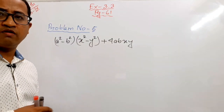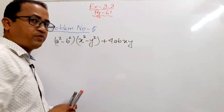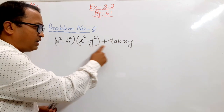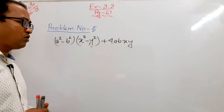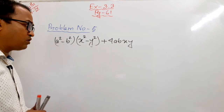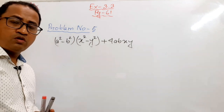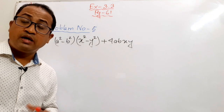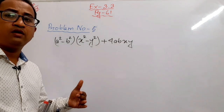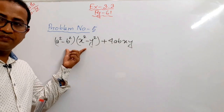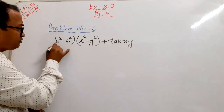Question number five: (a² − b²)(x² − y²) + 4abxy. There are two terms, no common factor, it is not a perfect square, and we cannot apply the difference of two squares directly. It is also not possible to break the middle term since there is no middle term. So we multiply out these two terms to get a new expression.